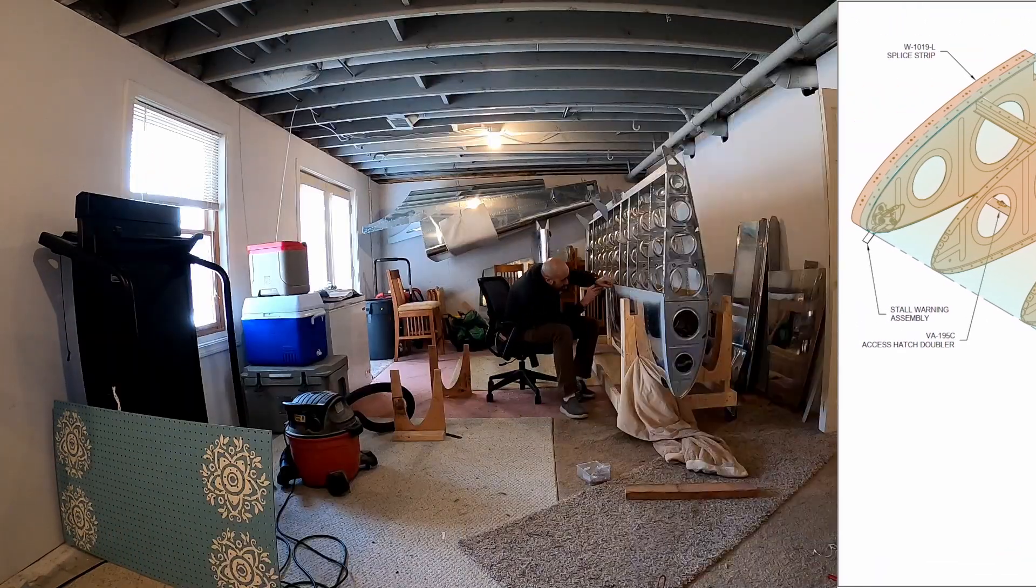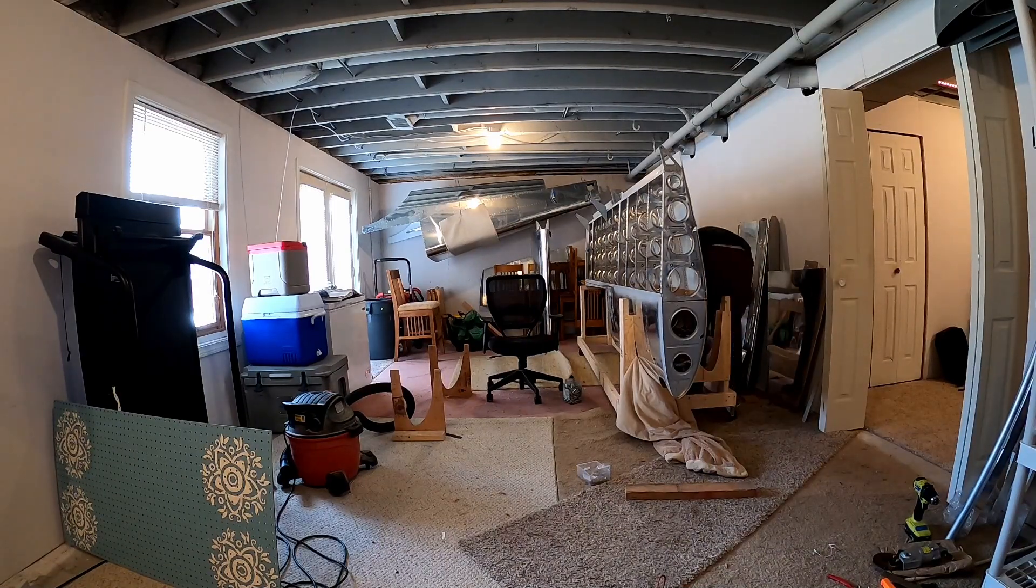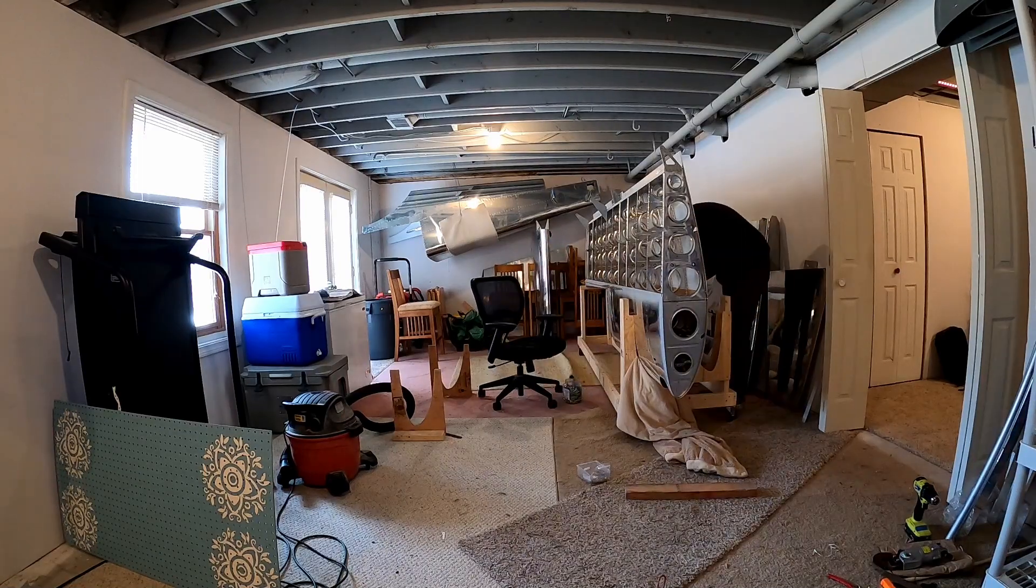Apparently I forgot to record the other wing attachment. By the way, where's the other wing? It's laying on the ground in the other room. You got a rivet from the front too.